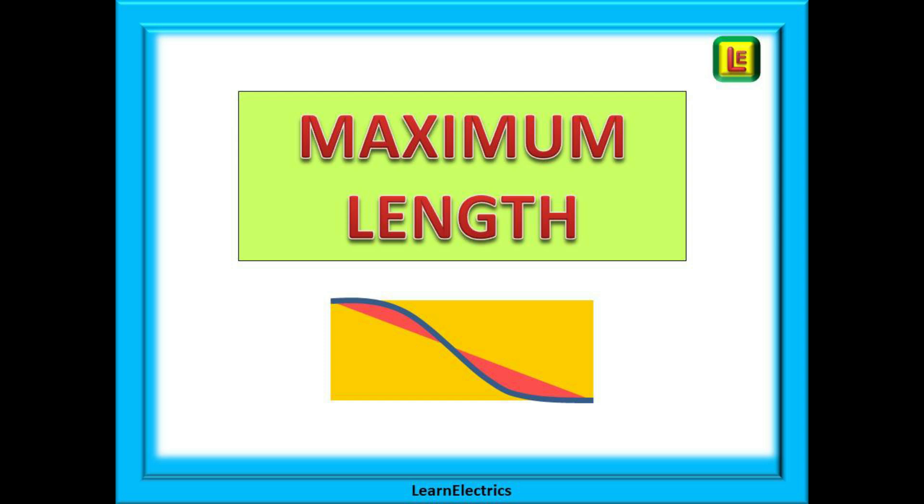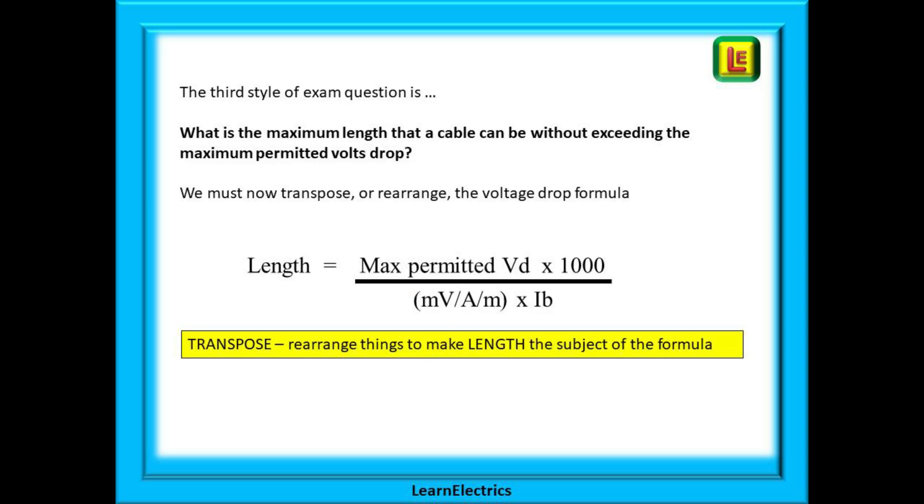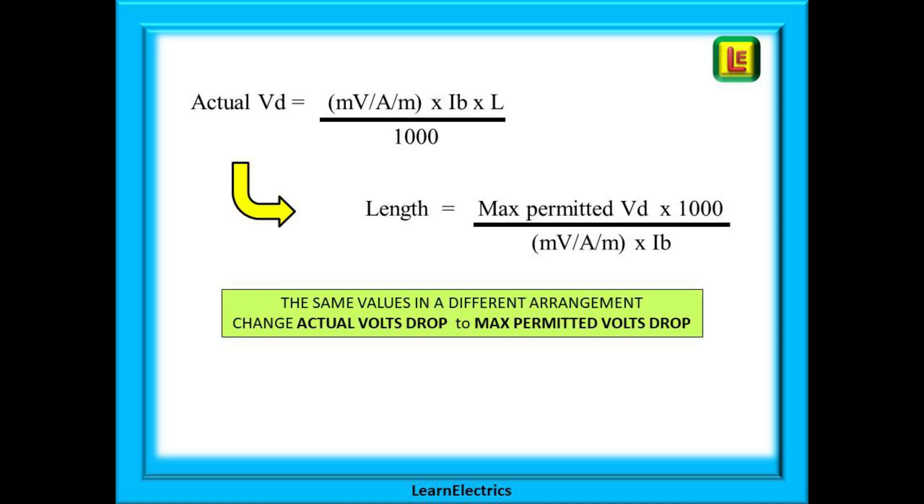Now we can move on to the maximum length of a cable. The third style of exam question is: what is the maximum length that a cable can be without exceeding the maximum permitted volts drop? We must now transpose or rearrange the voltage drop formula, and we show the new formula below. Here are the two rearranged formulas shown together. We are using the same terms but they have been transposed, and you will need to learn both formats. The important difference is that the actual volts drop has been changed to maximum volts drop. This will always be 6.9 volts for lighting and 11.5 volts for everything else.